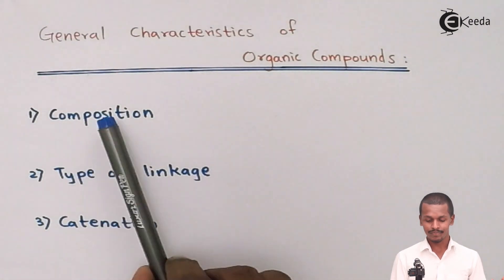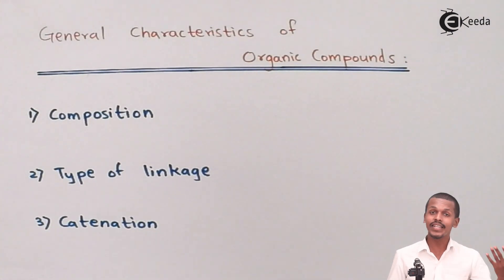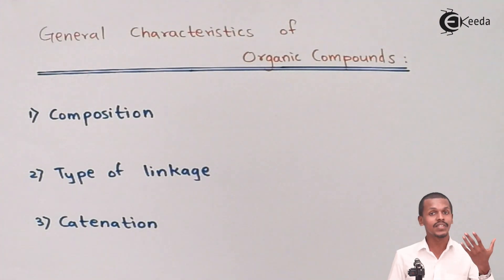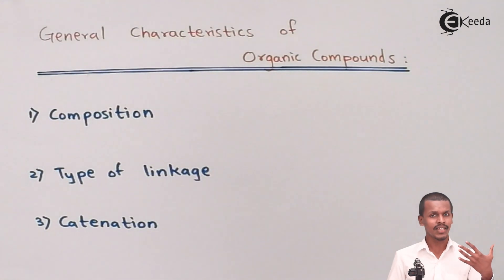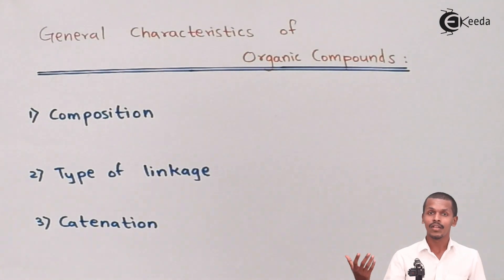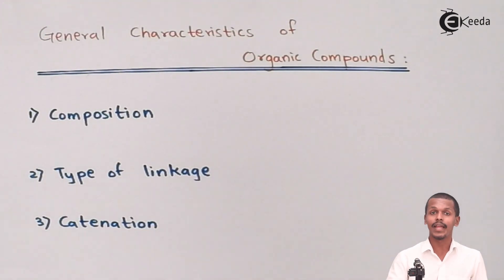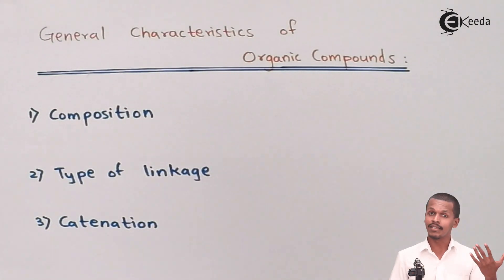Talking about the first characteristic, that is composition. Organic compounds are known because they consist of carbon atoms. It is not necessary that only carbon and hydrogen form hydrocarbons; there are also derivatives and compounds containing carbon along with hydrogen, oxygen, phosphorus, sulfur, etc. For example, PVC, the antibiotic aspirin, and even DNA — which is composed of carbon, hydrogen, and phosphorus — are all organic compounds.